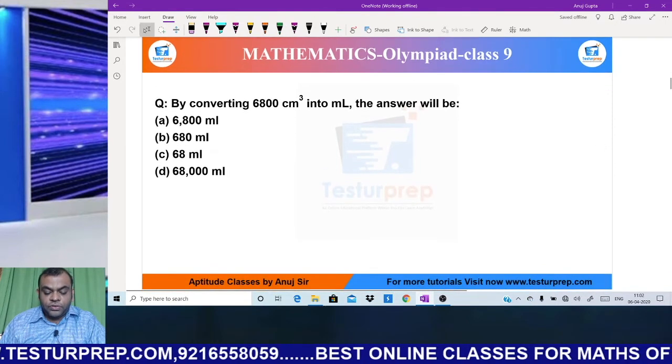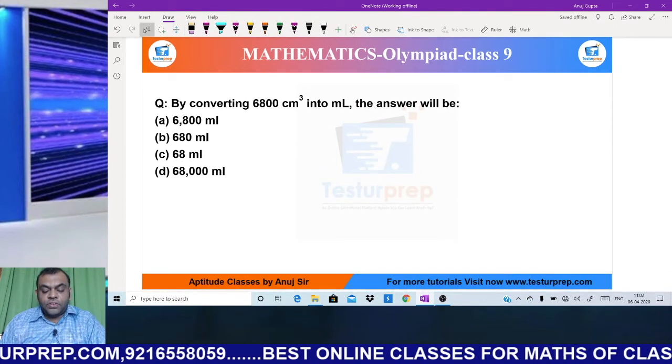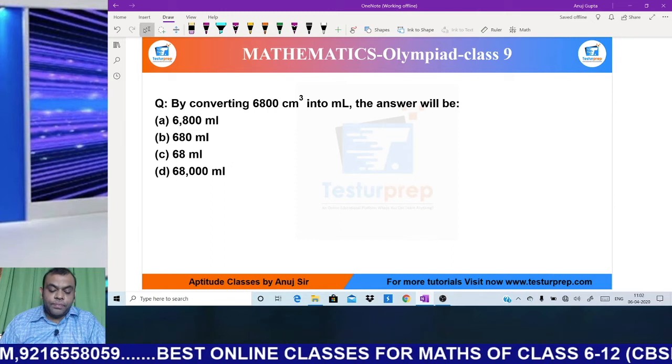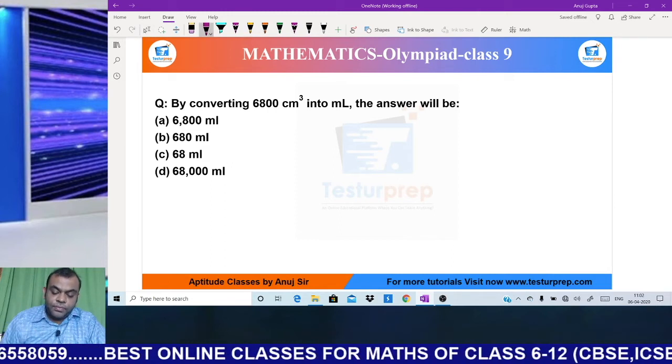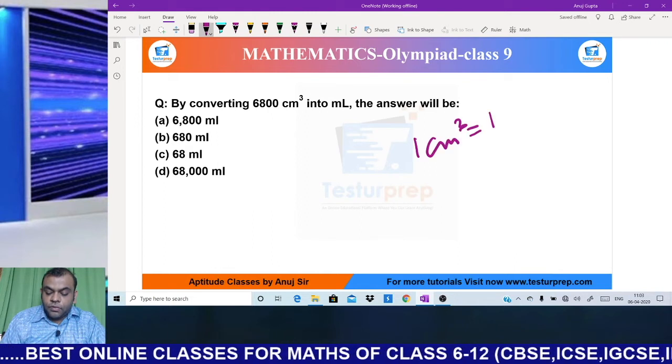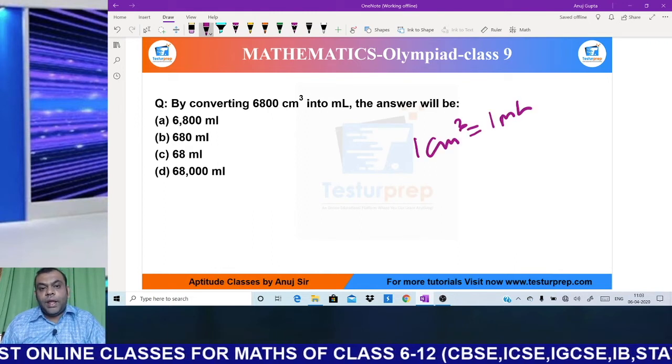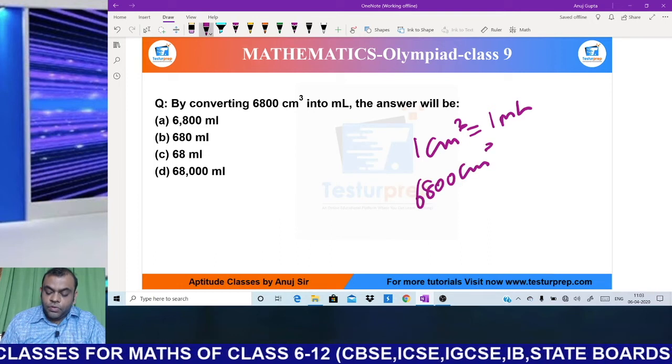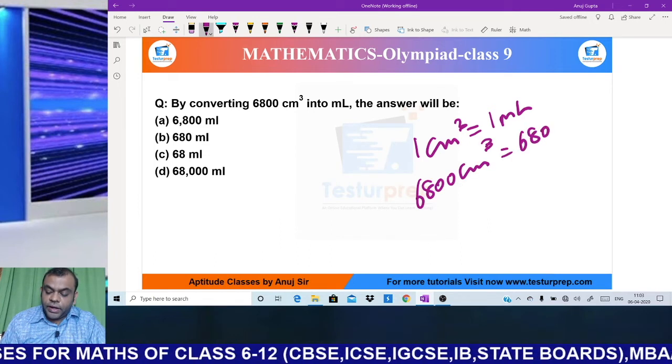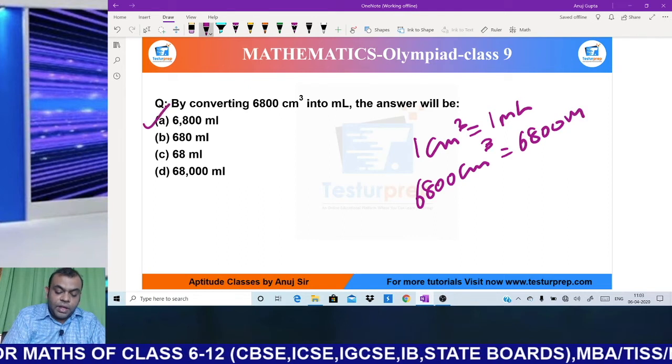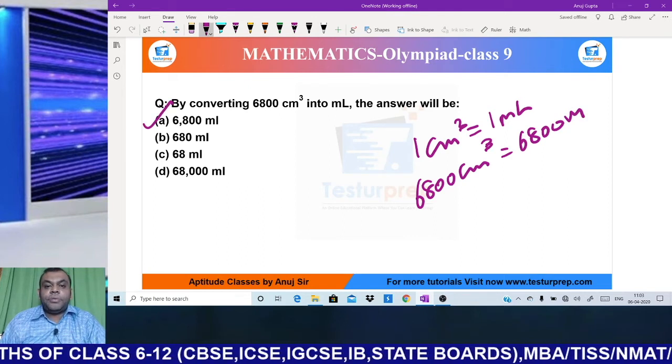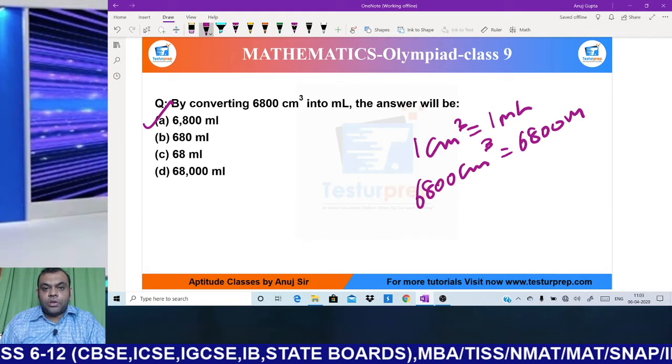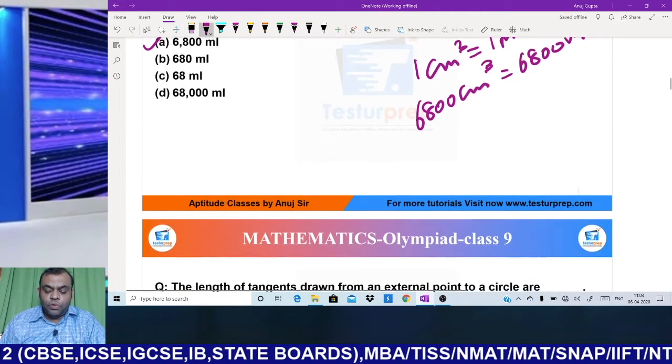My next question: by converting 6800 cm³ into milliliters, the answer would be? This is a basic conversion. One cm³ equals one ml. So 6800 cm³ = 6800 ml. My answer is option A, 6800 ml. I hope this concept is clear. Once clear, move on to the next question.